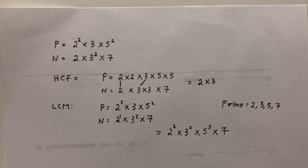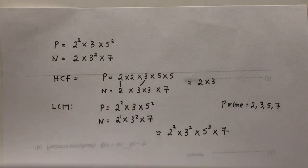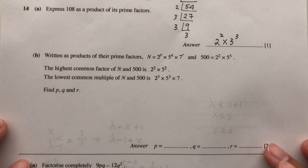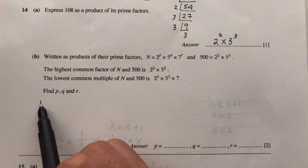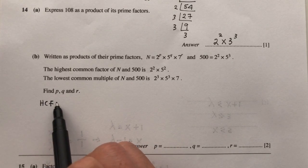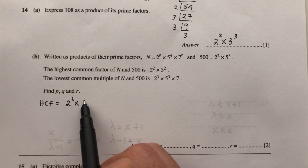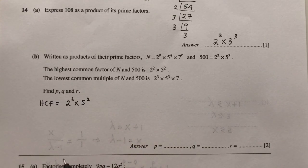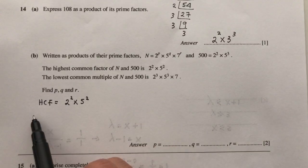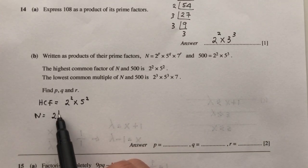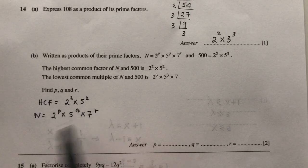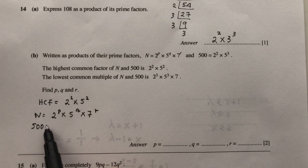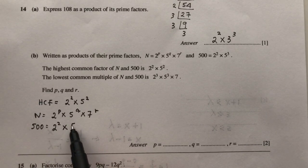So putting this in your mind on how to find those numbers, we can try to solve to find the value of P, Q, R. So first one, we know that the HCF is given by 2 power 2 times 5 power 2. So HCF again is what is common between those two. So we have two numbers here: N is 2^P times 5^Q times 7^R, and 500 is given by 2 power 2 times 5 power 3.